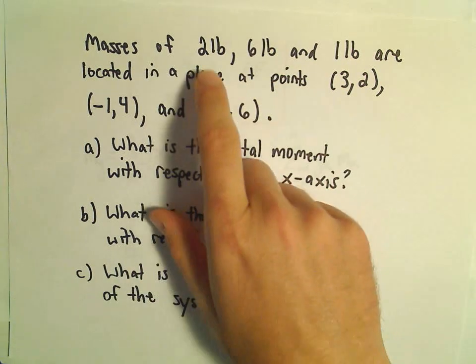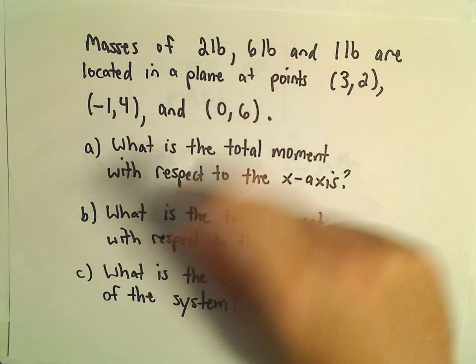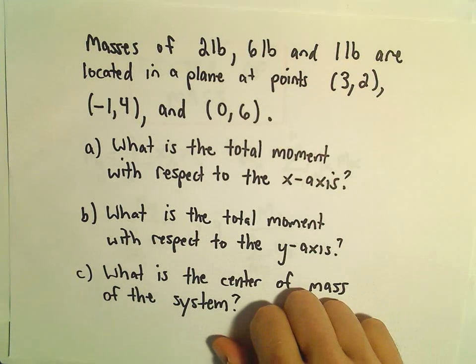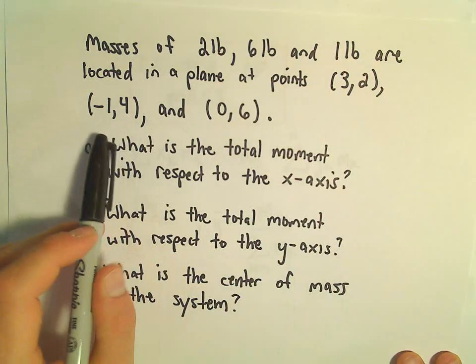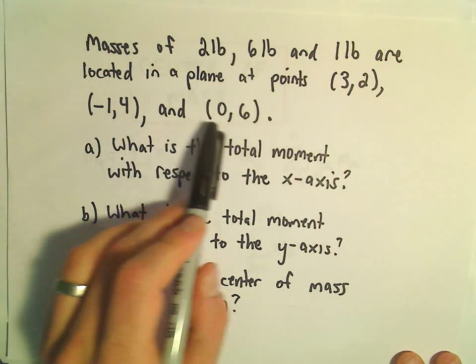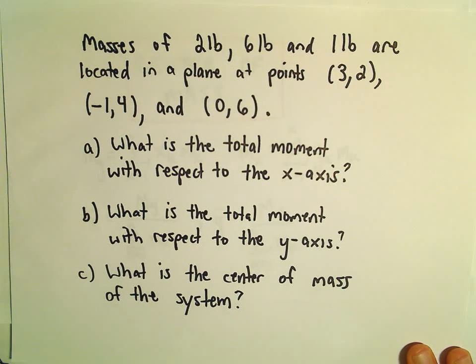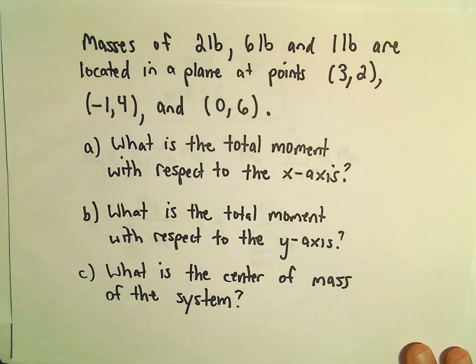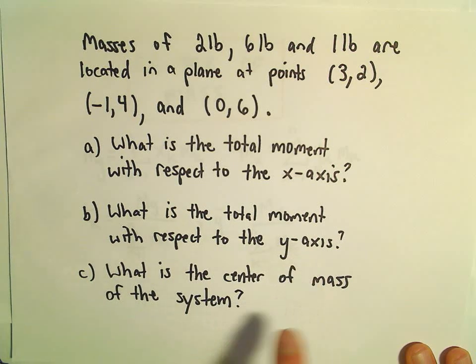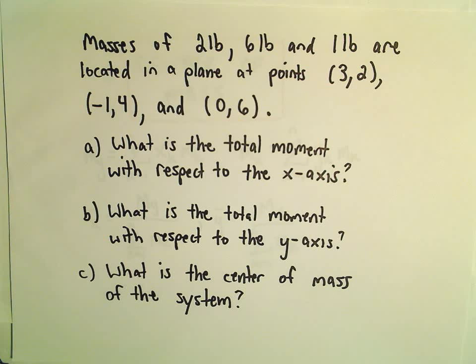Suppose we have masses of 2 pounds, 6 pounds, and 1 pound. Those are located at the points (3, 2), (-1, 4), and (0, 6) respectively. We want to figure out what's the total moment with respect to the x-axis, with respect to the y-axis, and then also what's the center of mass of the entire system.